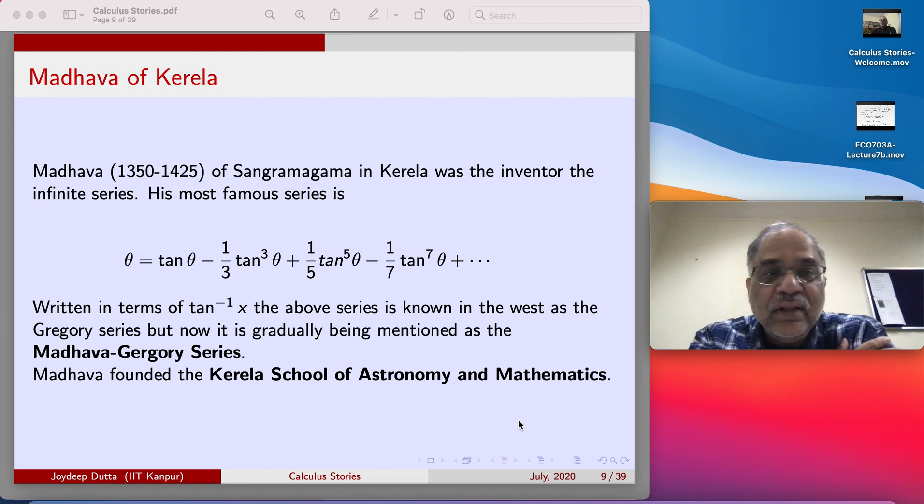His most famous series is writing a number in terms of its tangents. So theta is equal to tan theta minus one third tan cube theta plus one fifth tan fifth theta. Look at this plus minus alternation and look at the symmetry of the denominator and the power of the tangent. How beautiful this result is.